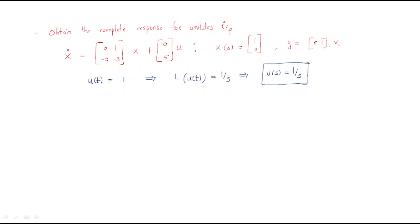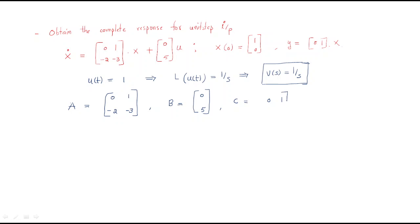Whenever the input is given, first write down x-dot = Ax + Bu. The A matrix given is [0, 1; -2, -3], B is given as [0; 5], x(0) is given, and y = Cx where C is given as [0, 1]. These are the matrices given.